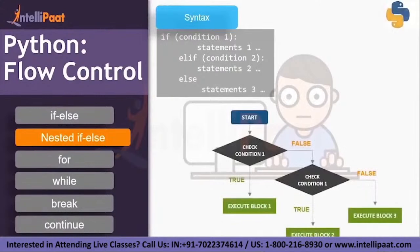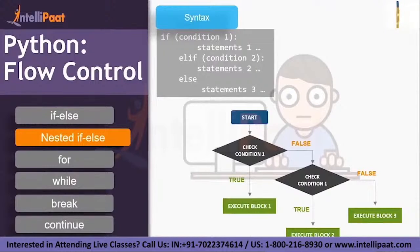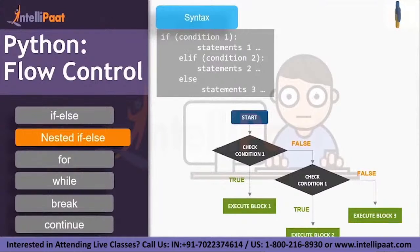Let's check the flow control of it. Start, check for condition one — if condition one is true, then the statement within the if block is executed, that is execute block one. If the first condition is false, then go and check for the second condition, that is the else-if condition. If the else-if condition is true, then your second block would be executed. If none of them are true, then finally the else block would be executed, that is execute block three. Remember, there is no condition associated with an else block — the else block only executes if all the above conditions are false.